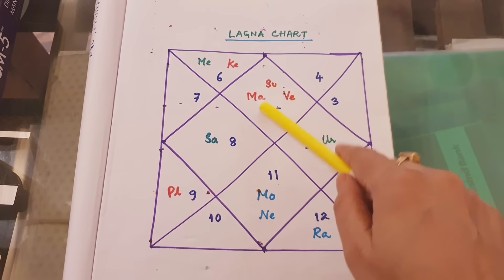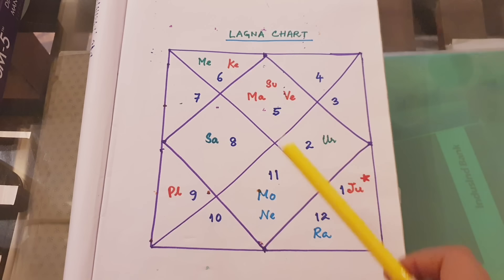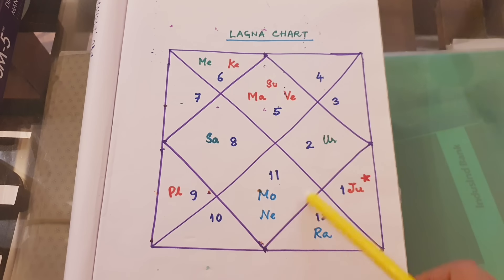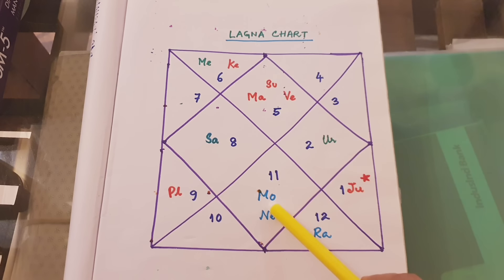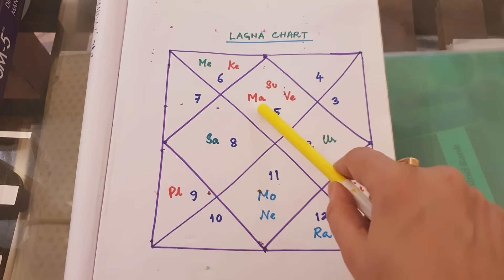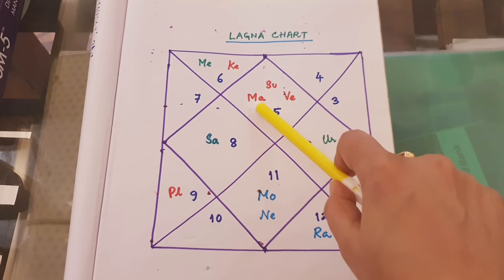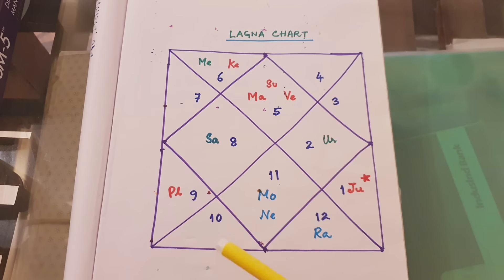So that's what we are going to discuss — you have to find out in which house your seventh house nakshatra lord is placed. For this female native, it is placed in the first house. In your chart, it may be placed in any of the other houses.